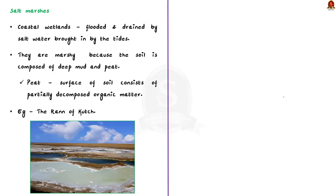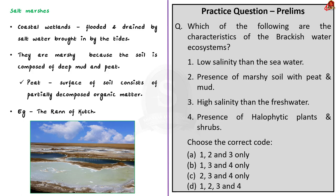Salt marshes are coastal wetlands flooded and drained by salt water brought in by the tides. They are marshy because the soil is composed of deep mud and peat. Peat is the surface organic layer of soil consisting of decomposed organic matter, derived mostly from plant material accumulated under conditions of waterlogging, oxygen deficiency, high acidity, and nutrient deficiency. The Rann of Kutch is an ideal example of salt marshes in India. These are important points to remember about brackish water ecosystems.